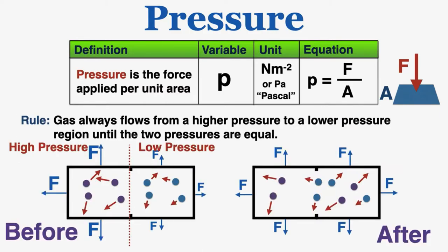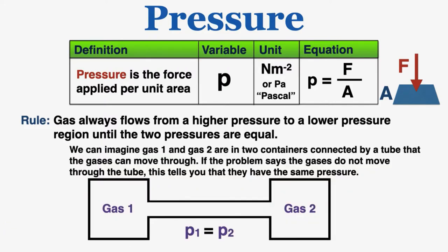As a rule, if there's any kind of difference in pressure in gas in a container, gas always flows from a higher pressure to a lower pressure region until the two pressures are equal and the pressure is equally distributed everywhere around the container. We can imagine that gas 1 and gas 2 are in two containers connected by a tube that the gases can move through.